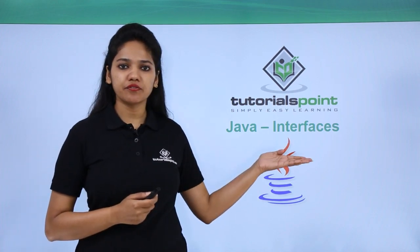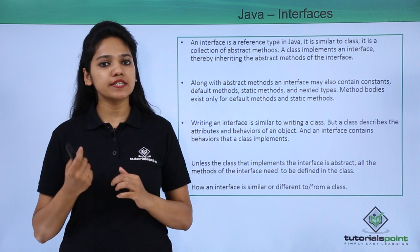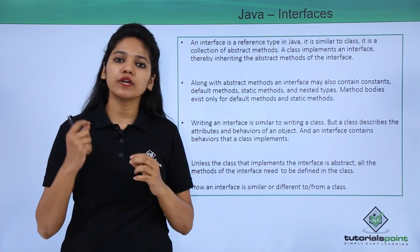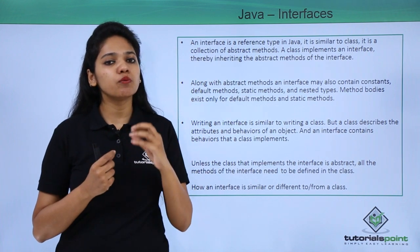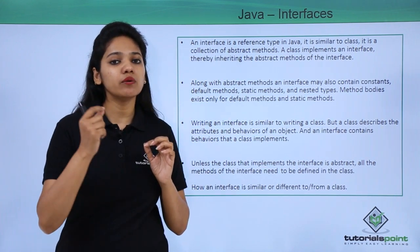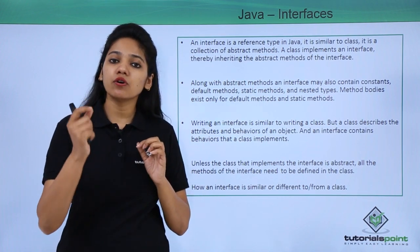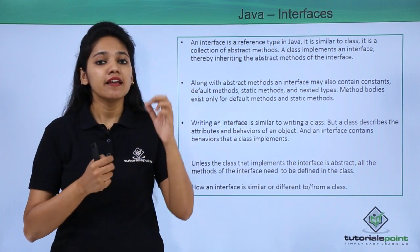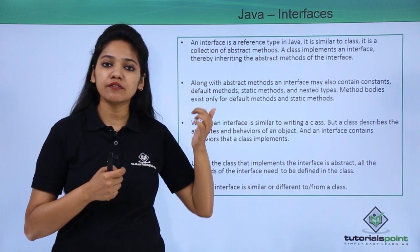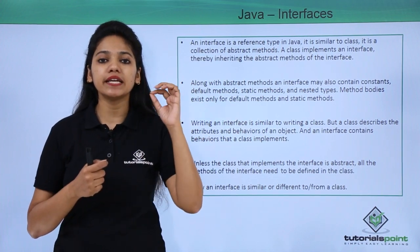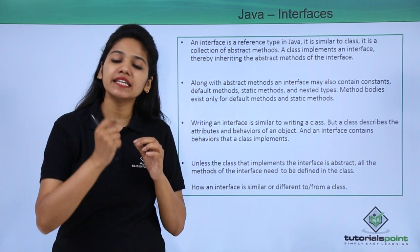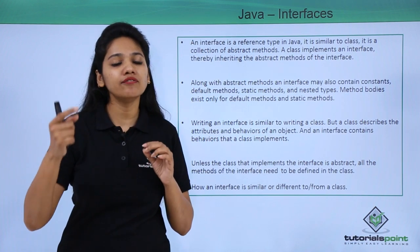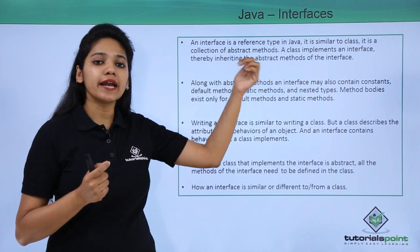The next type of abstraction is interface. An interface is a reference type in Java, similar to abstraction where you define all abstract methods. A class implements an interface, meaning the class is signing a contract with the interface, agreeing that it will define all the methods declared in the interface. That is what an interface is all about.